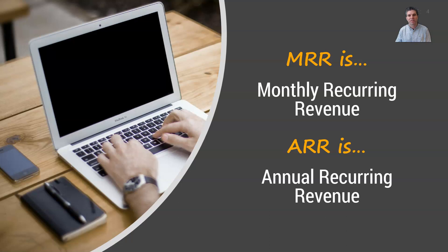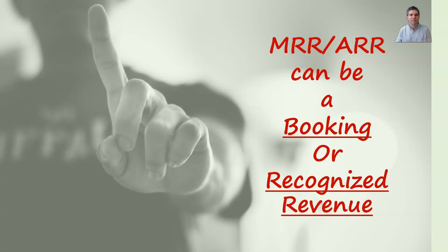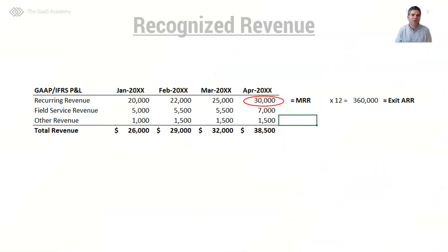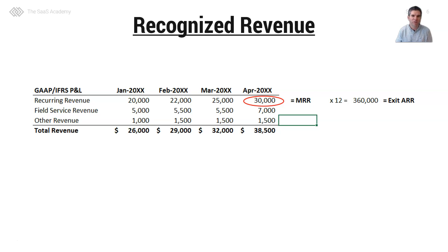When speaking about MRR you also hear the term ARR, which is annual recurring revenue. These terms can mean several things. The first is a booking and the second is recognized revenue. When speaking about MRR on a recognized revenue basis, we're talking about the recognized subscription revenue that is hitting our P&L or income statement each month.